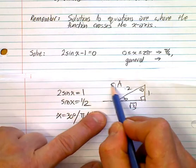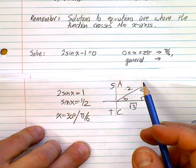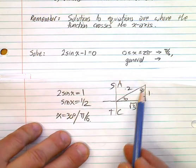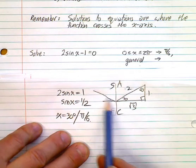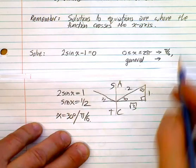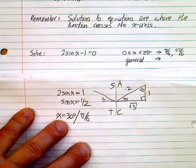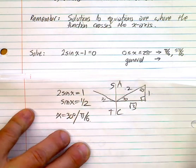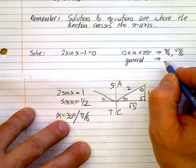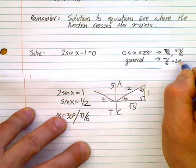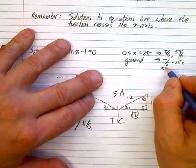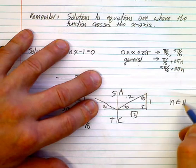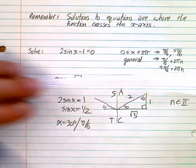We also need to think about the signs of trig functions in various quadrants. Sine is positive in quadrant one and quadrant two. So with a reference angle of 30°, the second solution is 150°, or 5π/6. Those are the two solutions for this equation. The general solution would be π/6 + 2πn and 5π/6 + 2πn, where n is an element of the integers.